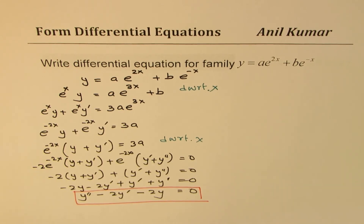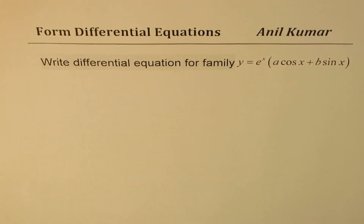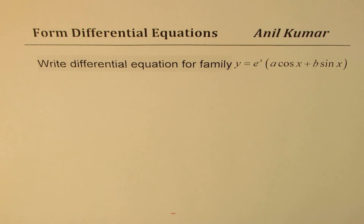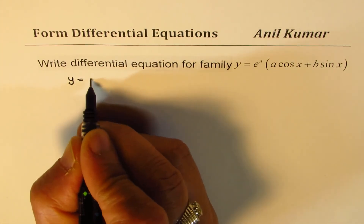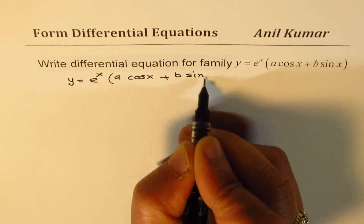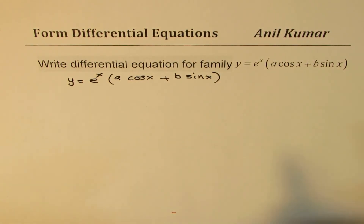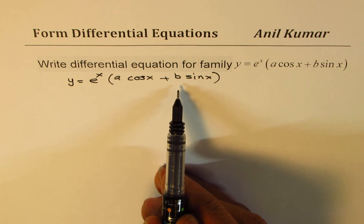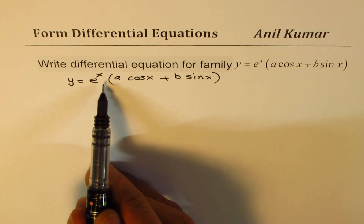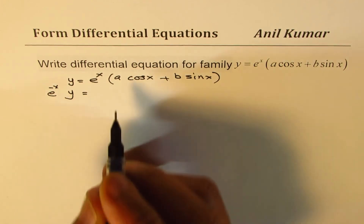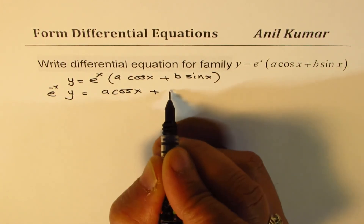Now we have a combination of exponential and trigonometric functions. Please pause the video and attempt this before looking at my solution. The question is y = e^x(a cos x + b sin x). In this case, we know the second derivative of (a cos x + b sin x) will be its negative. Dividing both sides by e^x gives e^(-x)·y = a cos x + b sin x.